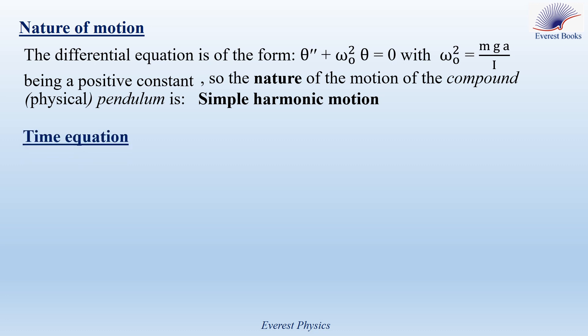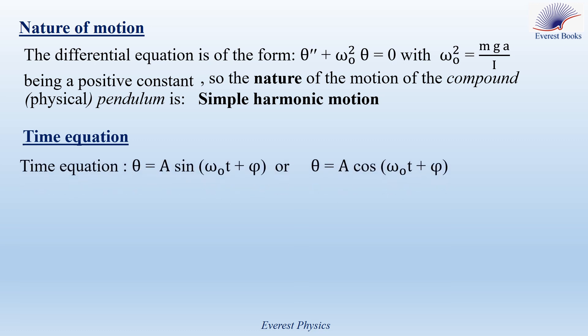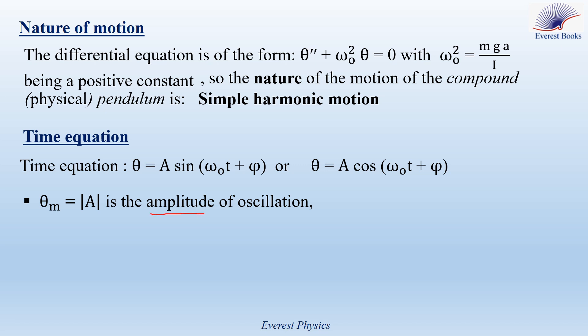Time equation, or solution of the differential equation: The solution has the form theta equals A sin(omega-0 t plus phi), or theta equals A cos(omega-0 t plus phi), where A, omega-0, and phi are constants. A can be negative or positive, so the absolute value of A equals theta-M, which is called the amplitude of oscillation. The amplitude is always positive.